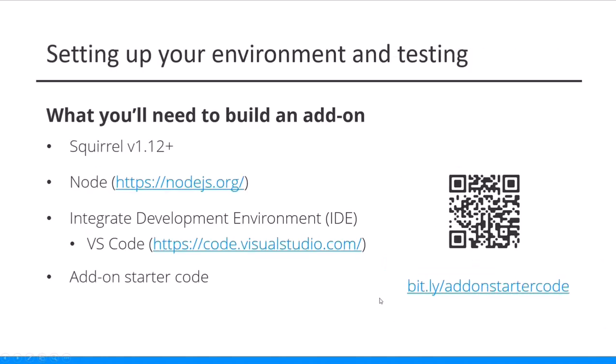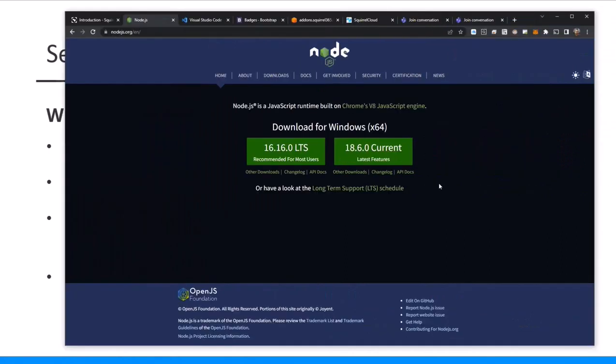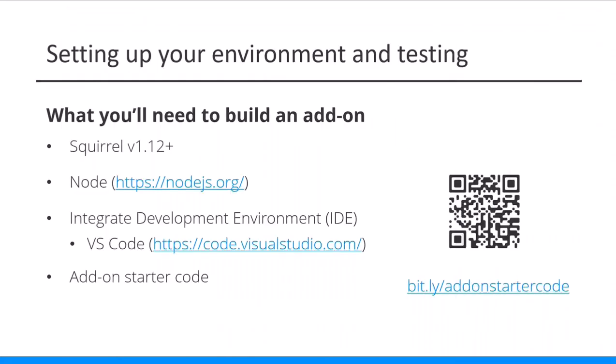To set up your environment, there are four simple things to do, probably in this order. First, you're going to need a Squirrel license, version 112 or above — that's the latest, and the free plan or paid plan is absolutely fine. The next thing you'll need to do is install Node — you can follow the link, go to the Node website, click on the download box, and it'll download and install to your system. Then you'll need an IDE. We use and recommend Visual Studio Code — it's free and really good. You can download and install it from the link, but if you already use a different IDE you prefer, that's fine too.